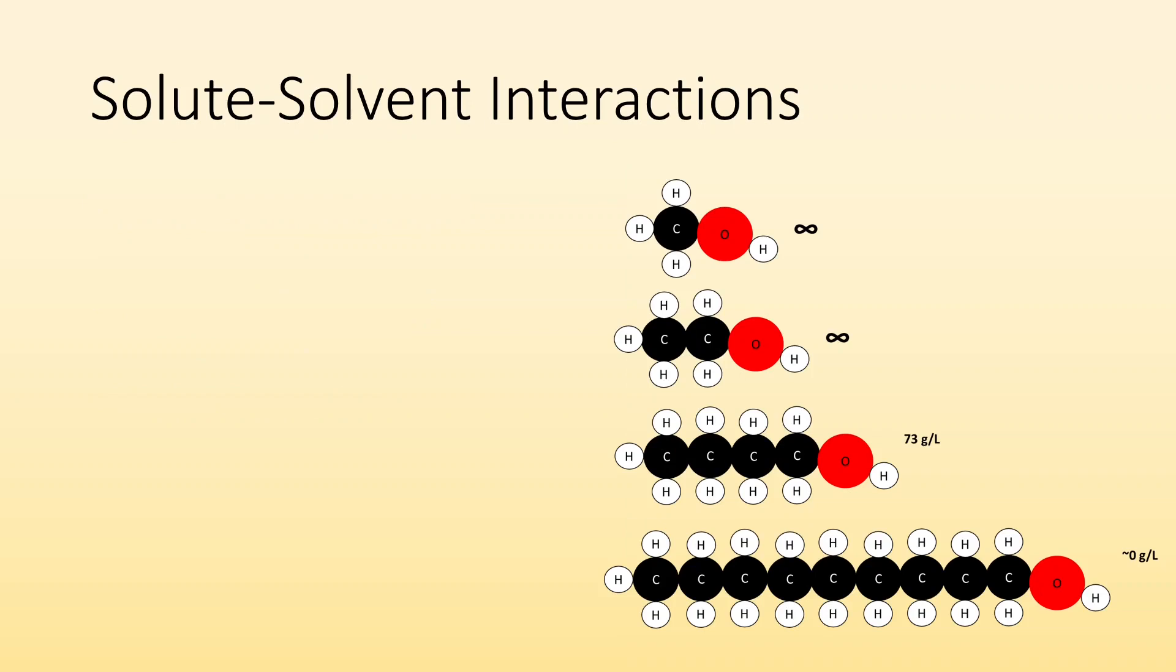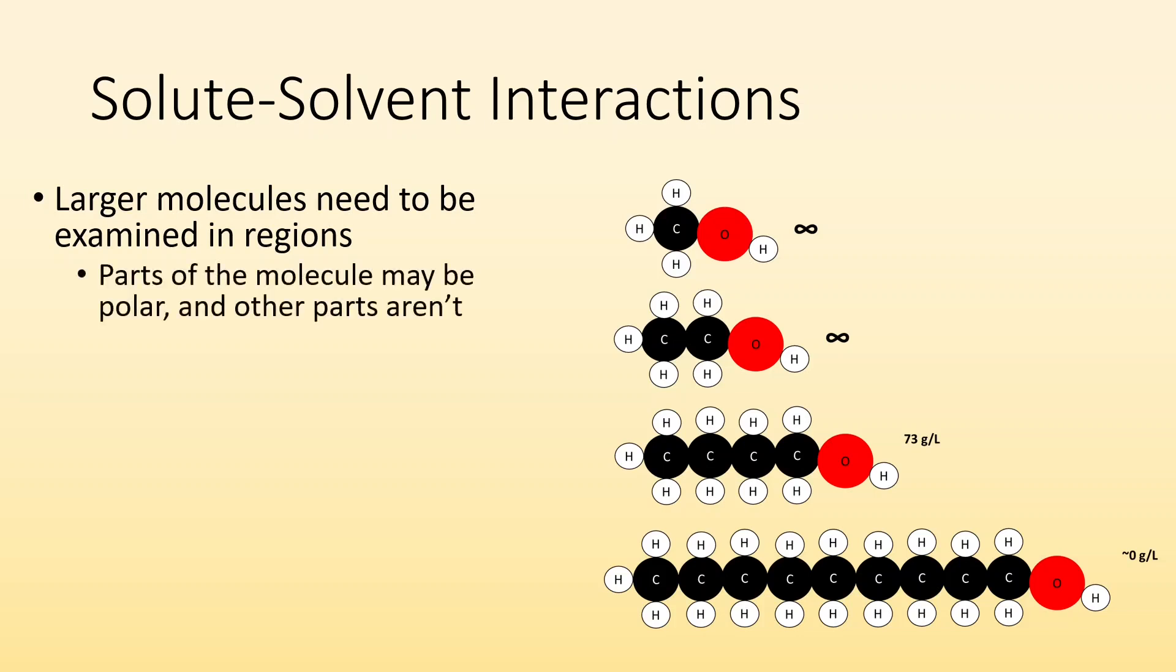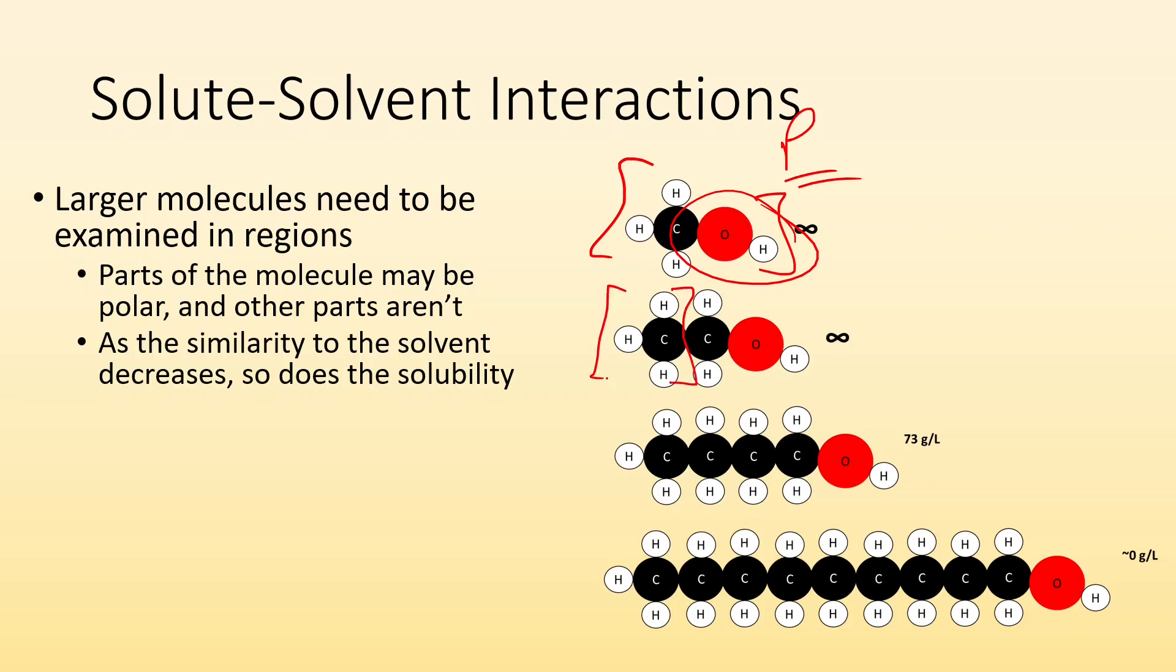If we're looking at molecules, sometimes they're so large that you need to examine different regions to figure out how they're going to interact with the solvent. Parts of the molecule may be polar but other parts aren't. As the similarity to the solvent decreases, so does the solubility. If you take a look at this molecule, we got methanol - it's a polar molecule, really small, hydrogen bonding available there. You'd say almost this entire thing is polar. If we get ethanol it's a little bit bigger. We start to add some non-polar sections but it's still really polar overall, so it's infinitely soluble in water.